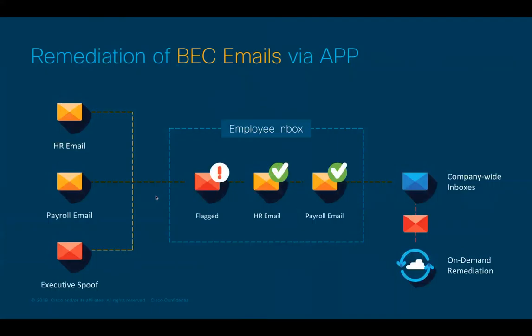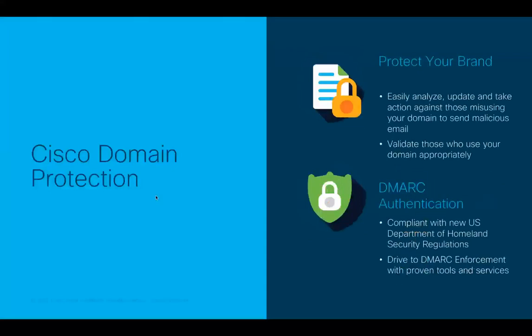CAPP also allows the admin to take action on emails suspected as BEC. CAPP has something called policy remediation — you can set up a policy and say if this email matches this type of deception, do something: delete it, quarantine it, or send it somewhere else. This is all automatic. For those who want to do it manually, there is on-demand remediation, where you can search based on specific senders, subject, or other criteria, pull out the emails, and take actions as according to the search results.